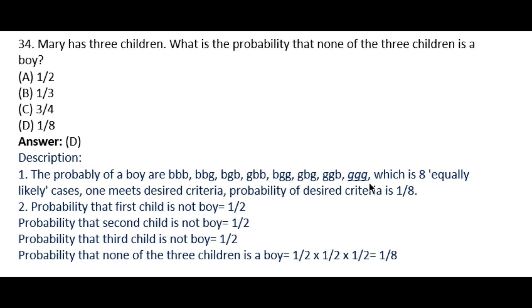This is also the way you can solve it: probability that the first child is not a boy = 1/2, probability that the second child is not a boy = 1/2, and probability that the third child is not a boy = 1/2. So 1/2 × 1/2 × 1/2 = 1/8. Answer D, that is 1/8, will be the answer.